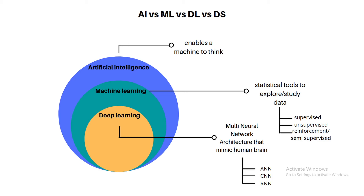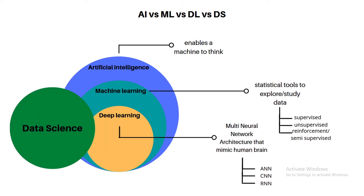Our last topic is data science. Data science is a technique used across all these areas. It involves a lot of mathematical tools — statistics, probability, linear algebra, calculus, and so on. Data scientists apply these basic and advanced mathematical tools to enable machine learning and deep learning. This is the basic difference between AI, ML, DL, and data science.